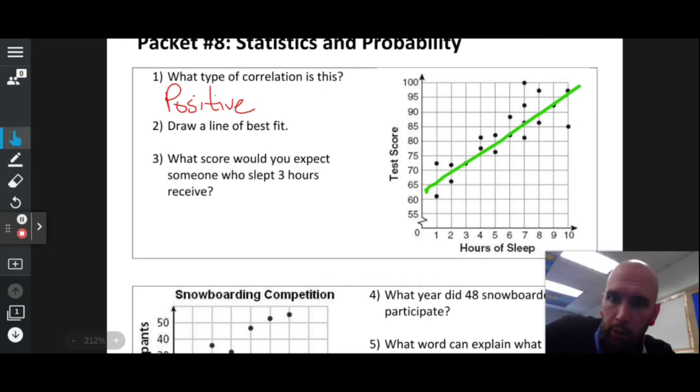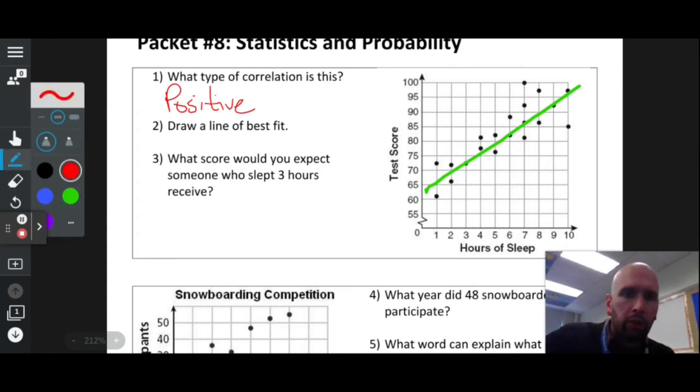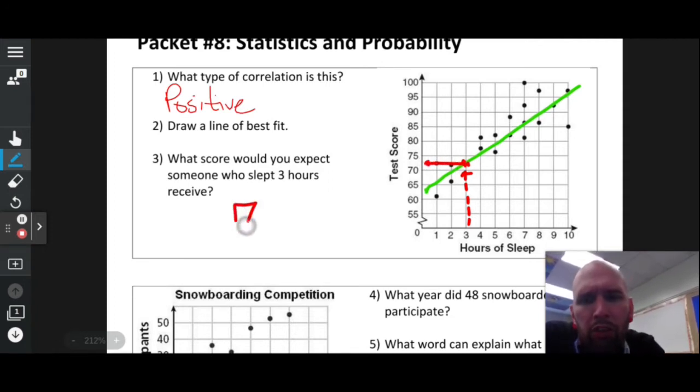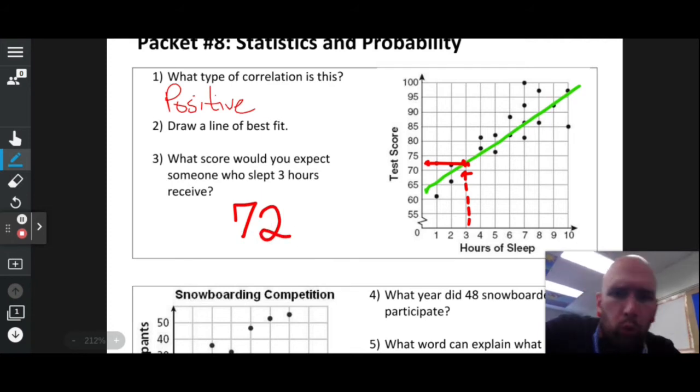What score would you expect someone who slept three hours to receive? Let's go to three hours and see what dot we can find. There's a dot right there on the line. Three hours goes to that dot which falls between 70 and 75, so we'll say 72 or 73. It's really an estimation here.